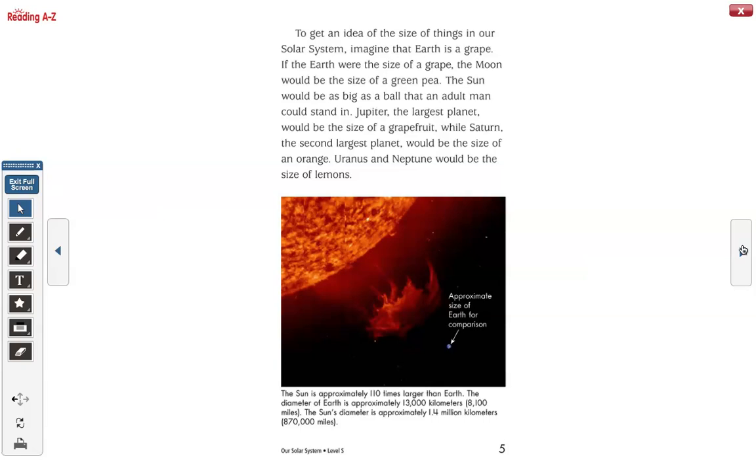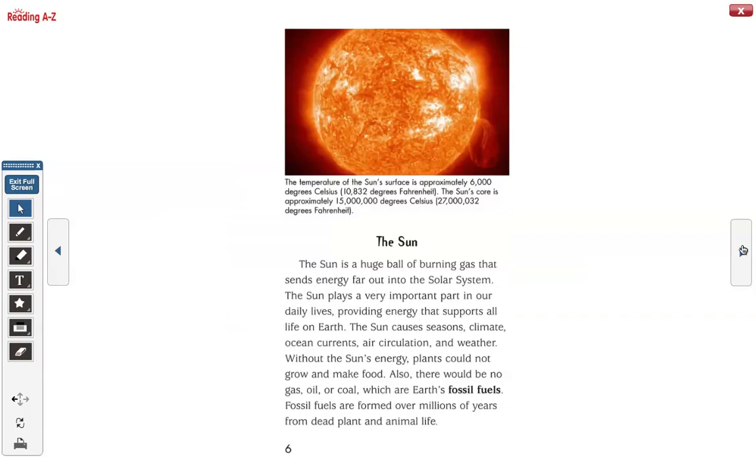Approximate size of Earth for comparison. The Sun is approximately 110 times larger than Earth. The diameter of Earth is approximately 13,000 kilometers. The Sun's diameter is approximately 1.4 million kilometers, 870,000 miles.